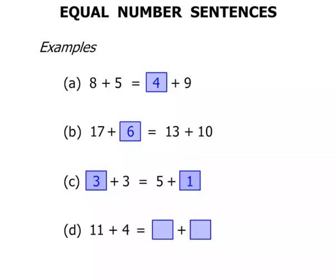This one here, 11 plus 4 equals something plus something. Well, 11 plus 4 certainly is 15. We've got 15 on that side. So we need 15 on the other side. So we simply need two numbers that add up to 15. Again, there's lots of different combinations. One of them would be 10 and 5. That would be 15. That's correct.